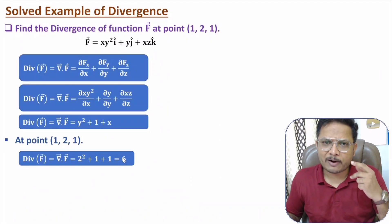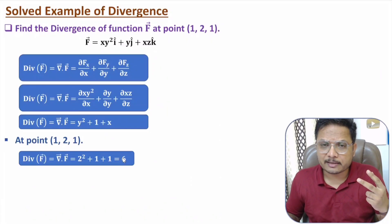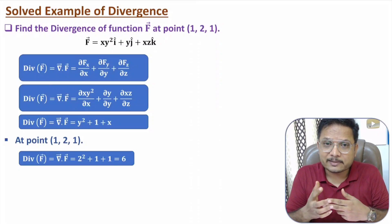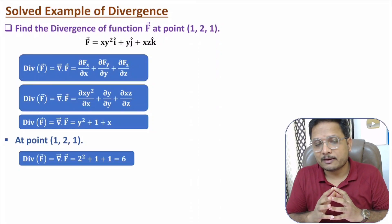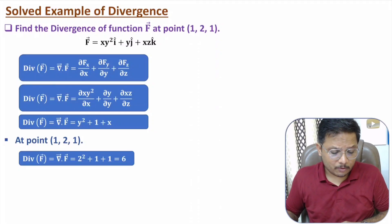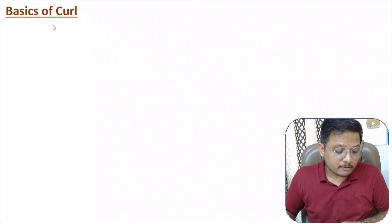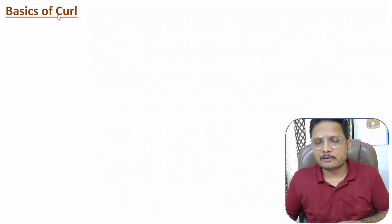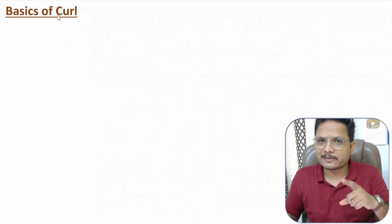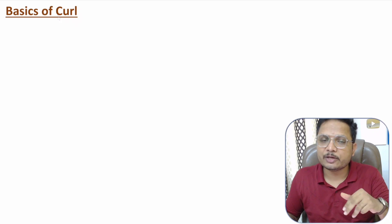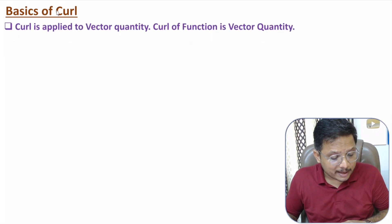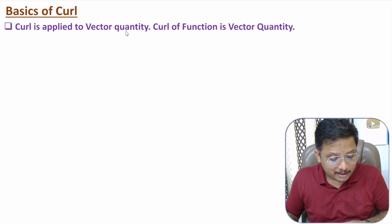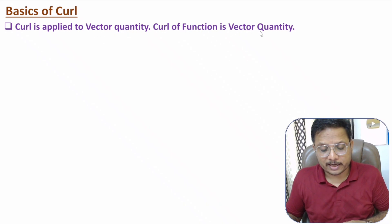So if you have a vector function, by divergence you can identify the overall variation. Now I will explain the basics of curl. Curl is also calculated using the DEL operator. Curl is applied on a vector quantity, and the curl of a function is a vector quantity.